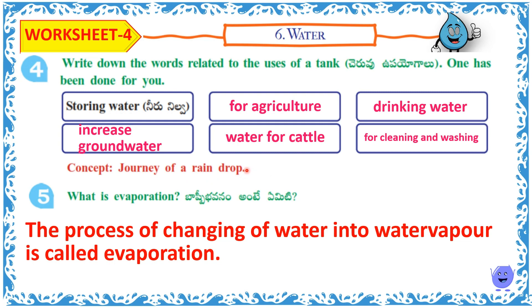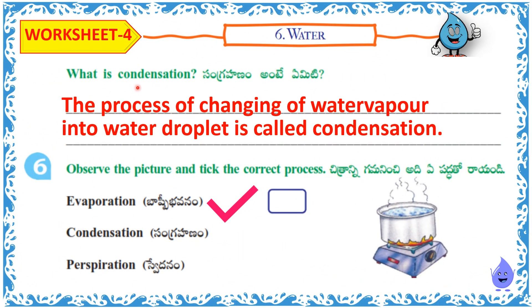Journey of a raindrop. What is evaporation? The process of changing of water into water vapour is called evaporation. What is condensation? The process of changing of water vapour into water droplet is called condensation. Observe the picture and check the correct process — this is evaporation.